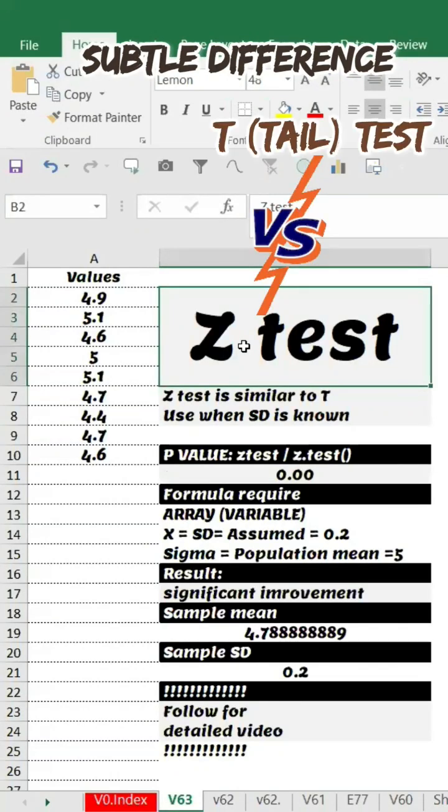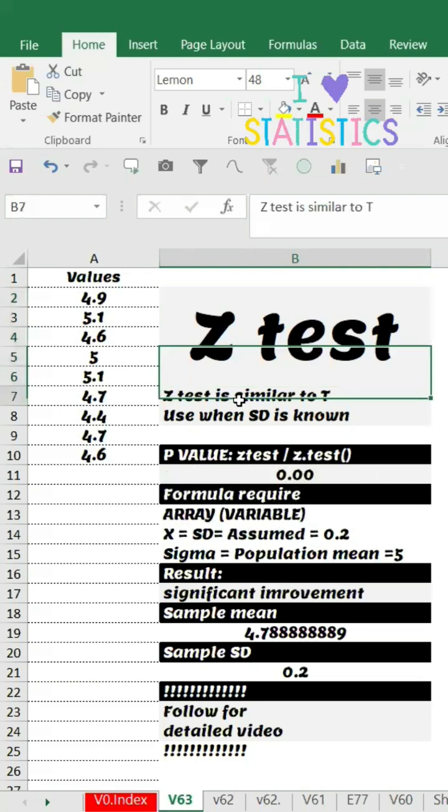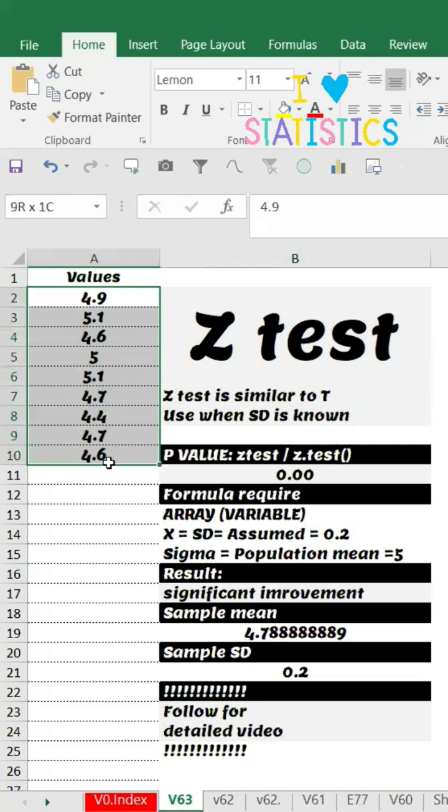The subtle difference between t-test versus z-test: z-test is used when you have variable data and particularly when the standard deviation is known. I have the array here.